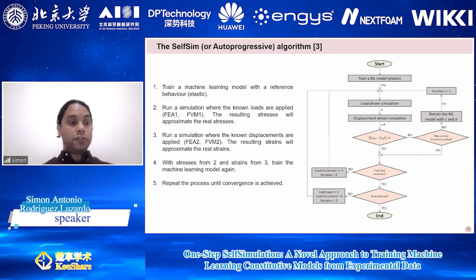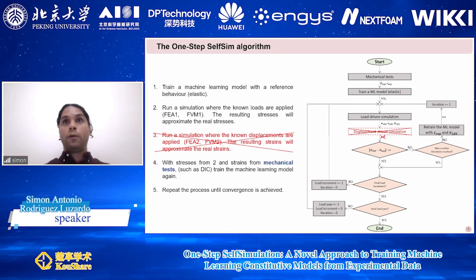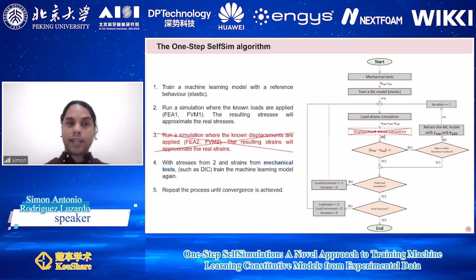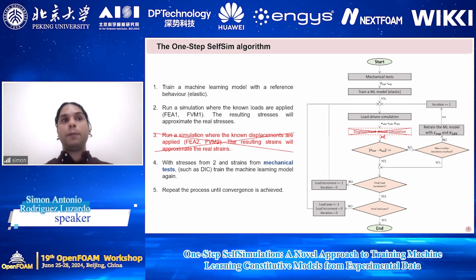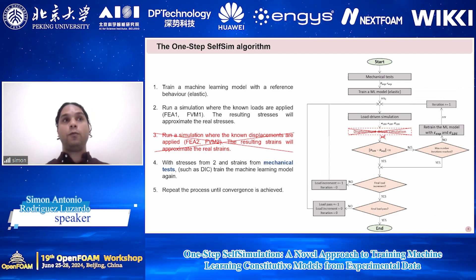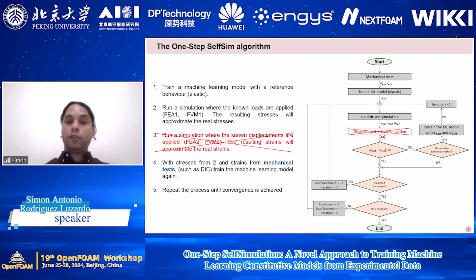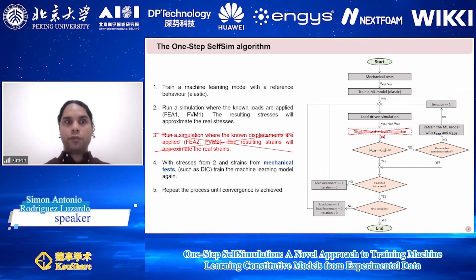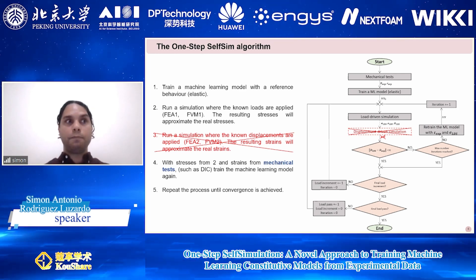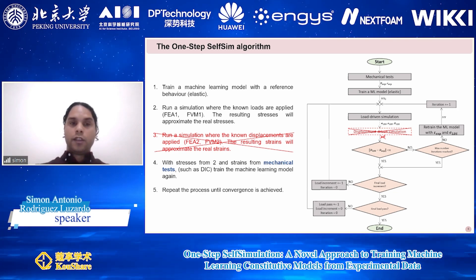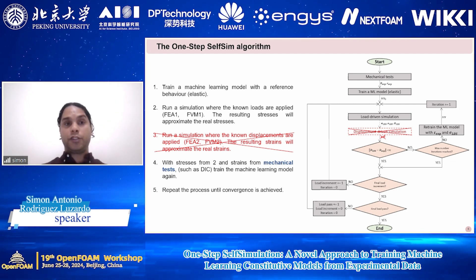We introduced a modification to this algorithm where we replace the strains obtained in the second simulation with the experimentally measured strain field — measured in a mechanical experiment using techniques such as digital image correlation. By doing this, we aim to both reduce computational effort and increase the efficiency of the method by increasing the number of real data points used. This is the one-step self-simulation algorithm.